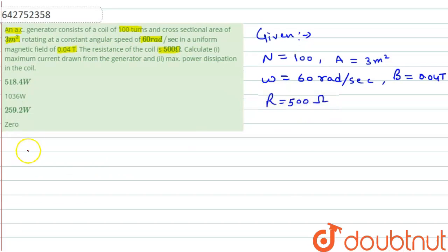For the first case, we have to calculate the maximum current. Maximum current I₀ equals E₀ divided by R, and maximum EMF will be equal to N A B ω divided by R. Now we can put the values.